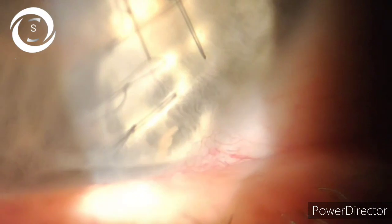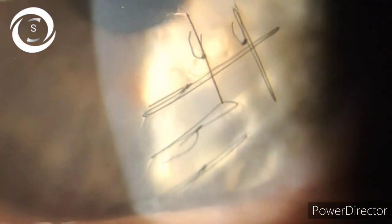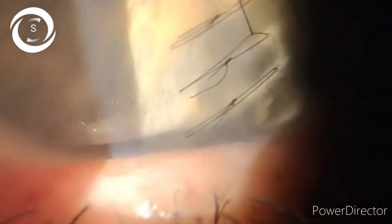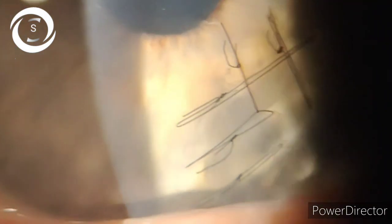His vision was 6/24. The pupil was round, you can see the pupil is round, regular, and reactive. The 6/24 vision is due to astigmatism. The astigmatism is due to sutures as well as the traumatic corneal scar, but I am hopeful that it will further improve to 6/6 after the removal of sutures.